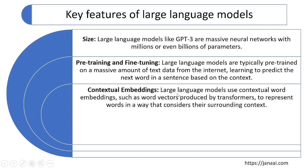Another key feature is contextual word embedding. LLM models use word embedding in NLP, such as word vectors produced by the transformer architecture. Whatever word we give as input gets converted into a vector, and then the model finds the cosine similarity of that vector to understand the surrounding context and relationships between words.